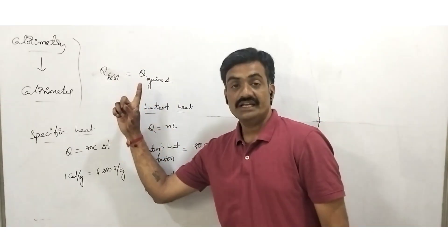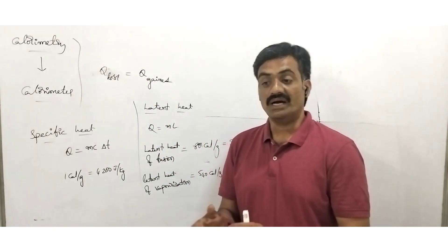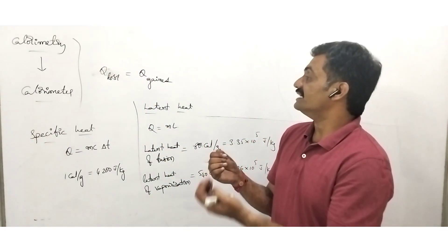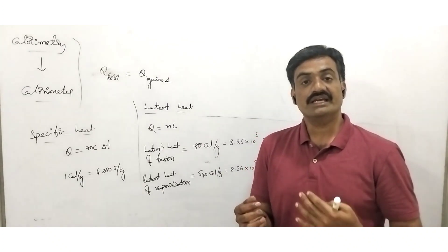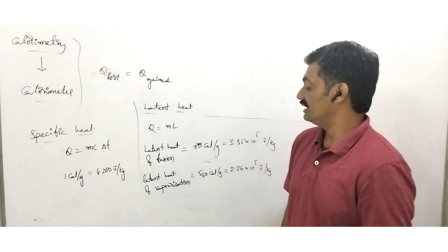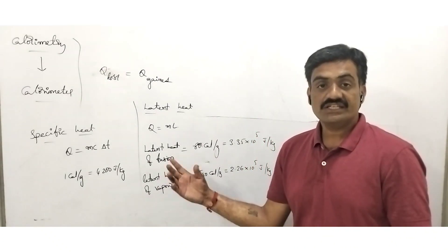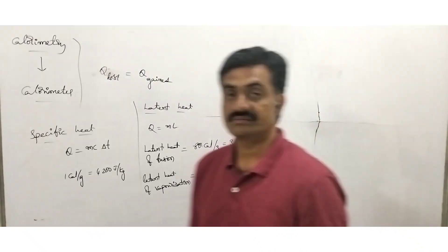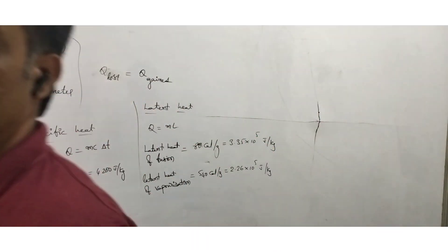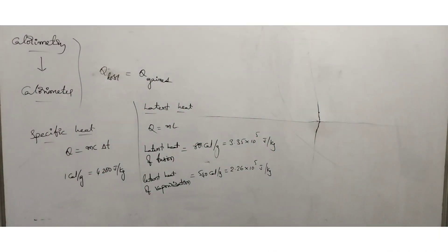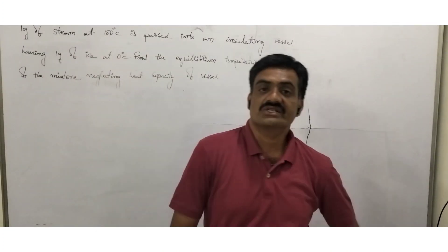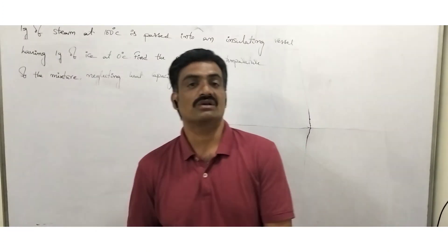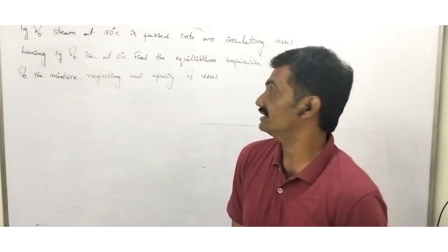These are the values for latent heat of fusion and latent heat of vaporization. Once again, heat lost by a body is equal to heat gained by the body. Take a screenshot — we will continue. Now let's look at problems based on this heat lost and heat gained concept in calorimetry.